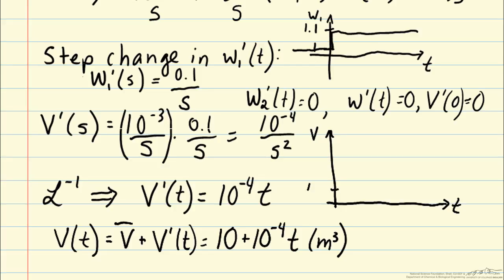And so we can go ahead and plot v versus time. And we start off at 10, here is in seconds, v is in meters cubed. So we start off at 10 and then we have this linear increase over time. So if we consider one hour or 3,600 seconds, we will be up to 10.36 meters cubed after one hour.